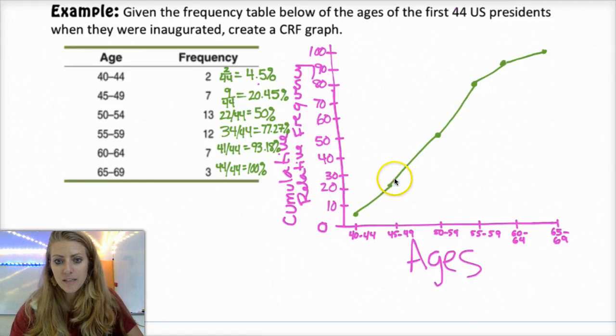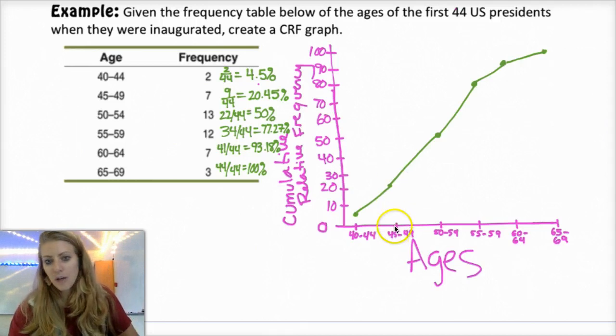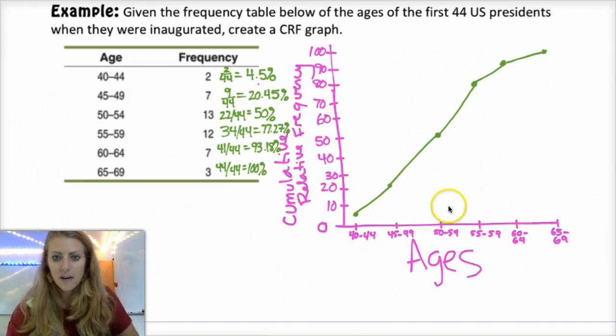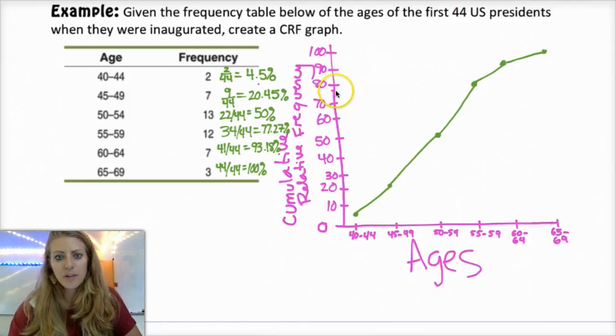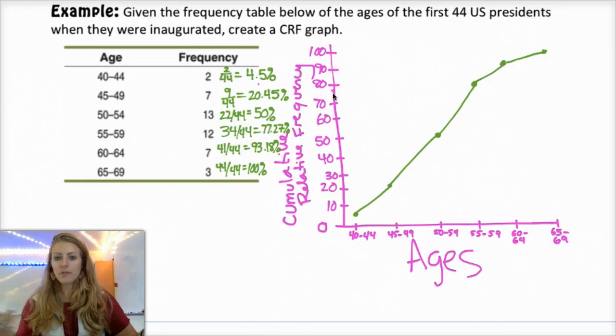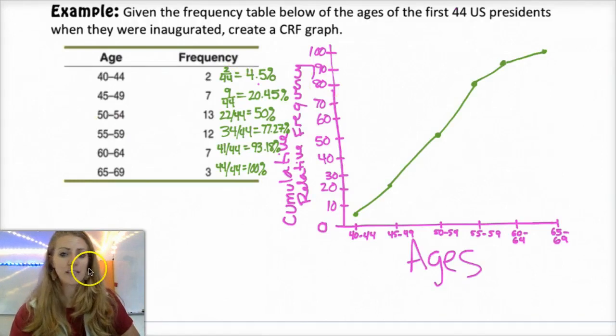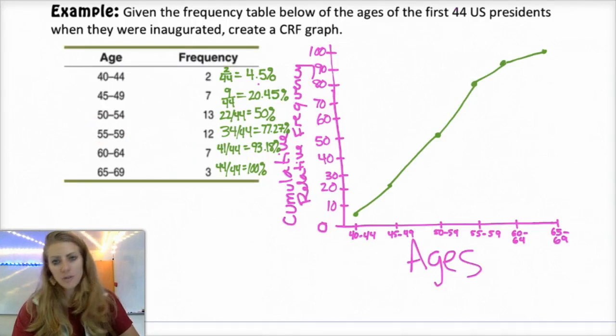The first quartile has 25% of the data below it. So you would go over to 25% of the data and then go down. 25% of the data is below 45 to 49. So I know that Q1 is in there somewhere. And you do the same thing for Q3, you're looking for 75%. So that's kind of what they're good for. They're really useful to find the median and Q1 and Q3 from those graphs and also the percentiles.